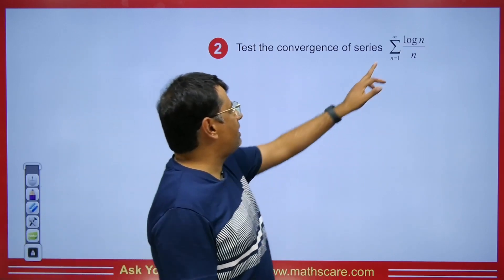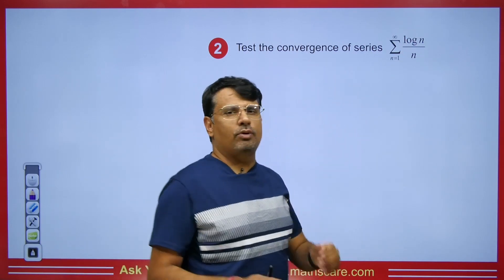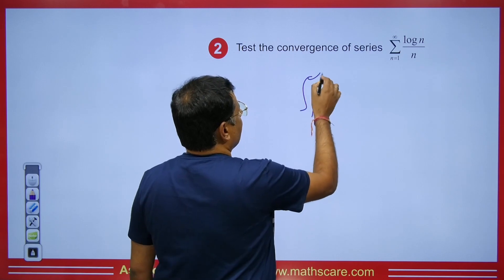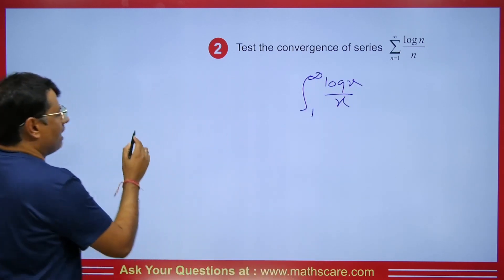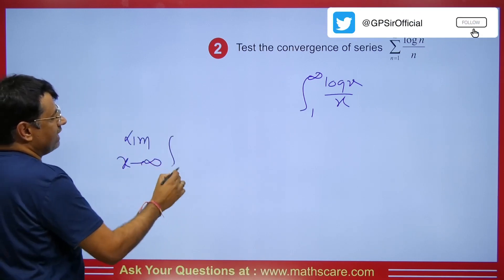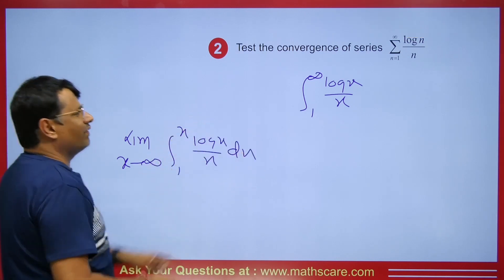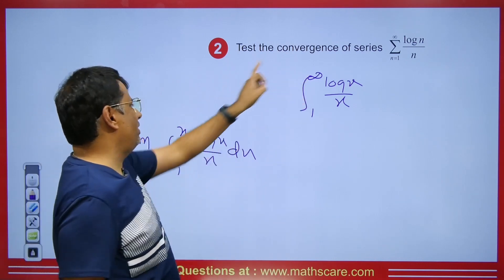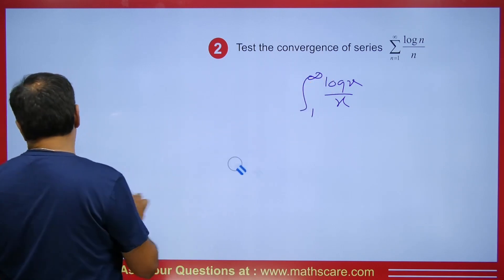Now let's look at the series summation n=1 to infinity of log(n)/n. This is also monotonically decreasing, positive, and integrable, so it can be solved easily. This gives us the integral from 1 to infinity of log(x)/x dx. We can write this as the limit x tends to infinity of the integral from 1 to x of log(x)/x dx.